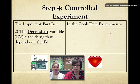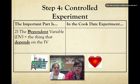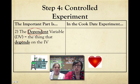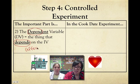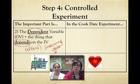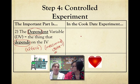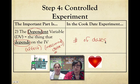Part number two is the dependent variable, also called the DV. The dependent variable depends on the IV — it changes based on whatever you're doing with the independent variable. Another way to remember it: it's the thing that we're measuring. The dependent variable is what you are measuring — it's the outcome you're looking for, what you collect data on. In our experiment, what we're measuring is whether or not Ms. Cook can get a date — so it's the number of dates she gets.